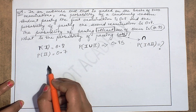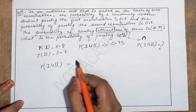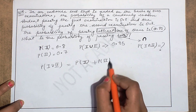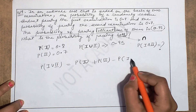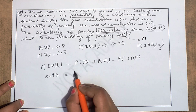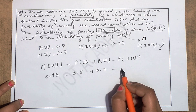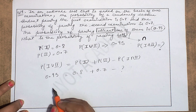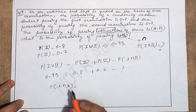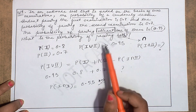Apply the formula: P(First ∪ Second) = P(First) + P(Second) − P(First ∩ Second). Here P(First ∪ Second) = 0.95, P(First) = 0.8, P(Second) = 0.7. Solving for P(First ∩ Second), you get 0.55 as your answer.